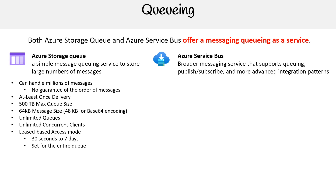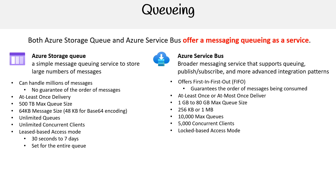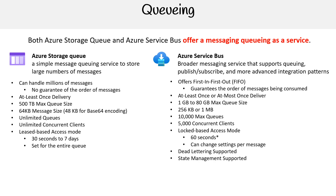On the Azure Service Bus side, it can offer first-in first-out, which guarantees the order of messages as they're consumed. It supports at-least-once or at-most-once delivery. Max queue size is 1 GB to 80 GB, with message sizes from 256 kilobytes to 1 megabyte — much larger than Azure Storage Queue. There's a maximum of 10,000 queues and 5,000 concurrent clients, with lock-based access mode configurable per message at 60 seconds. It also has dead letter support, state management, message group support, deduplication, queue purging, and transaction support.